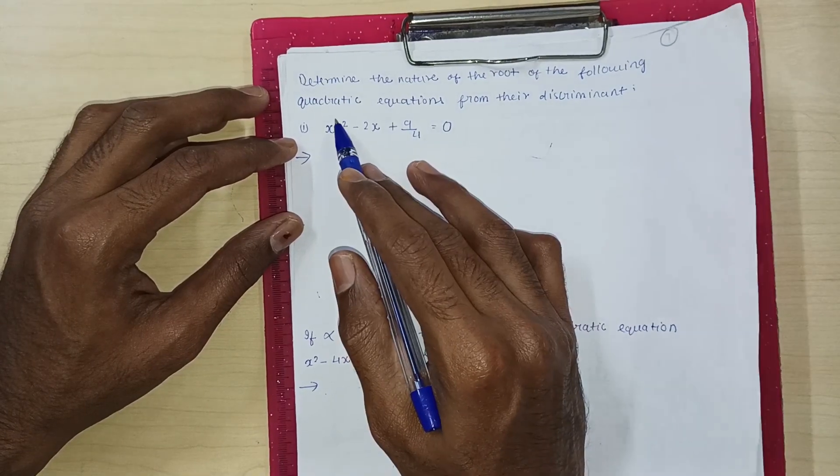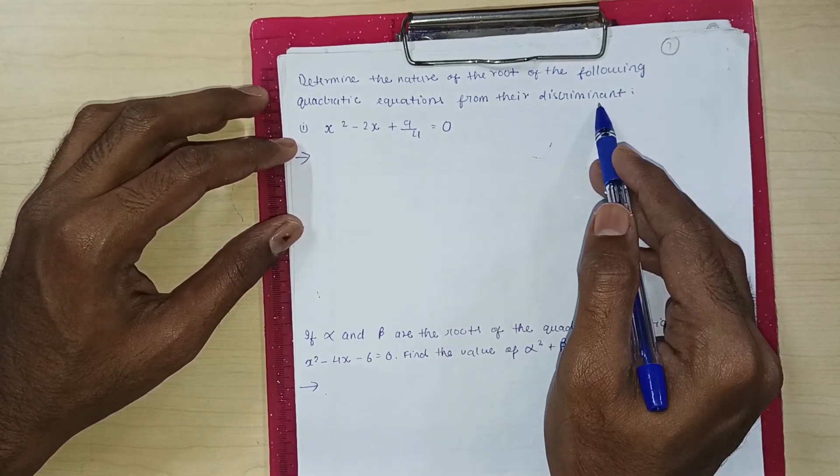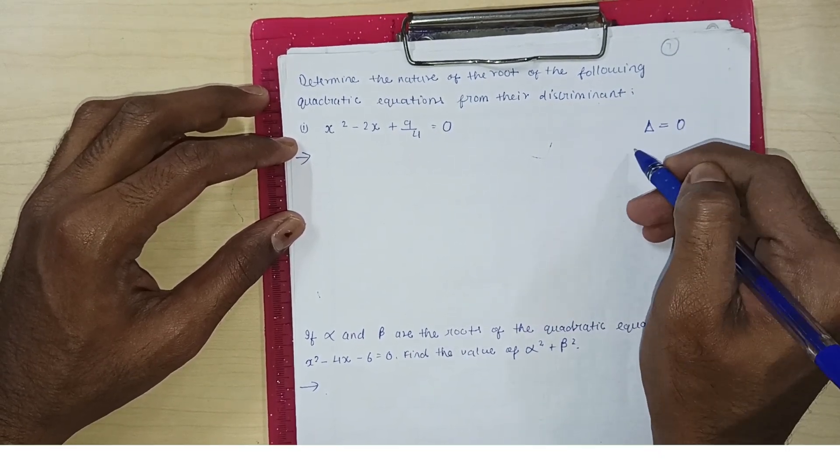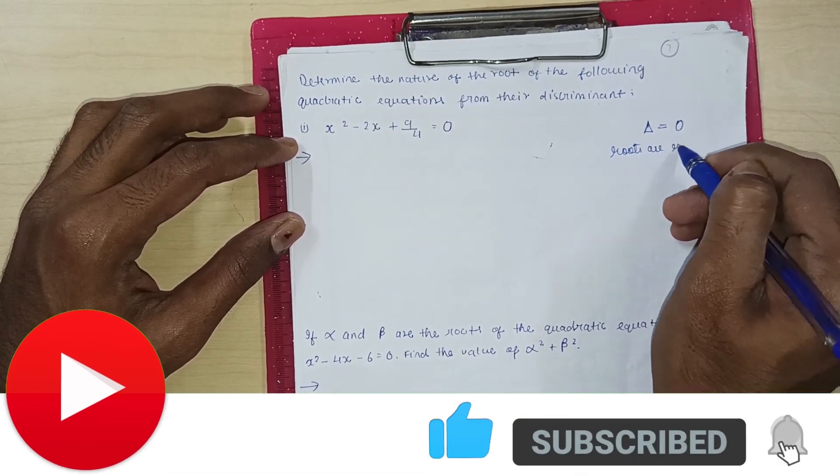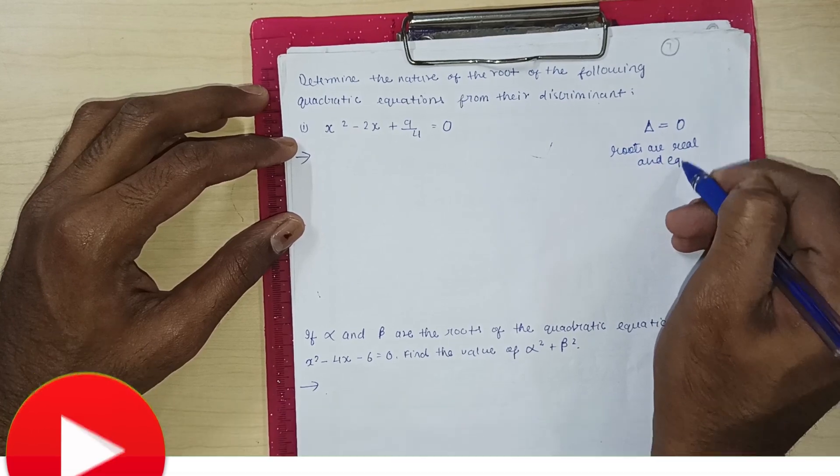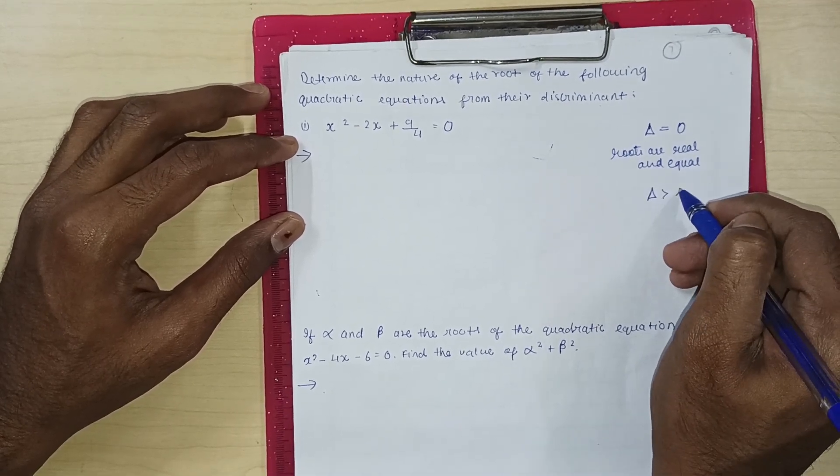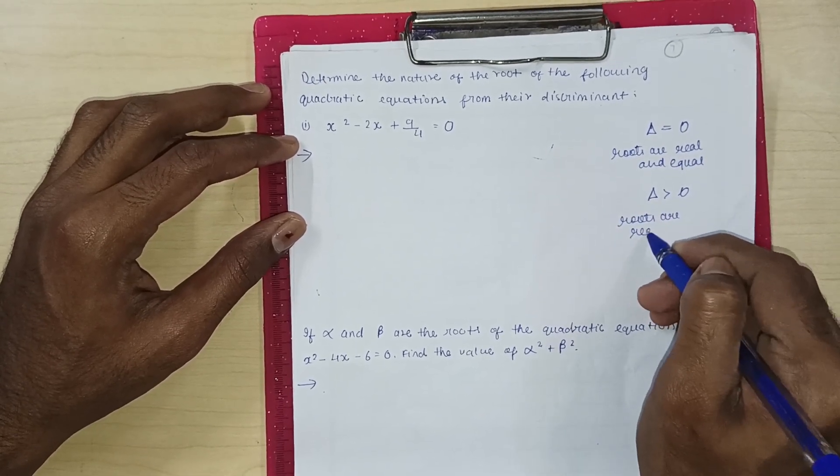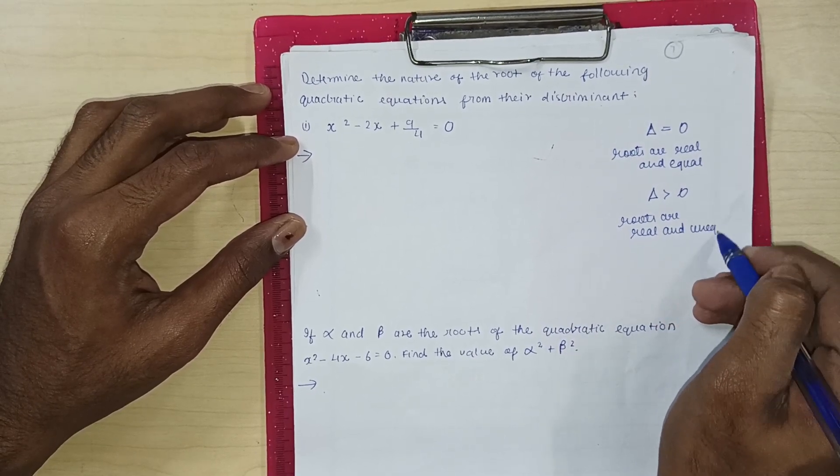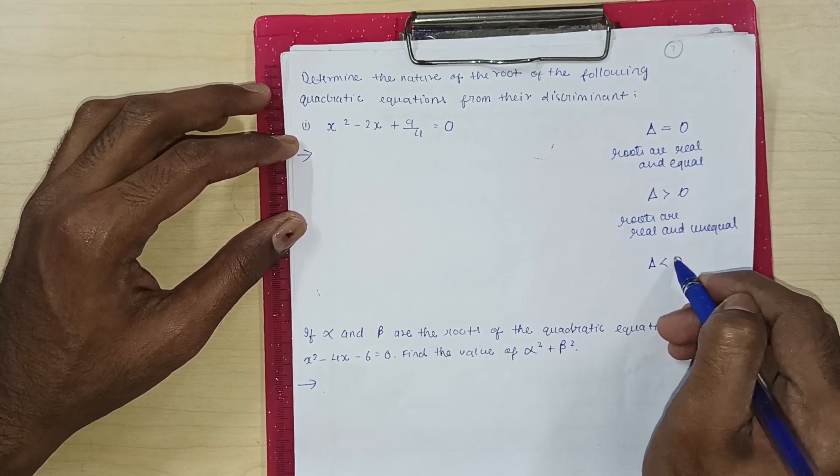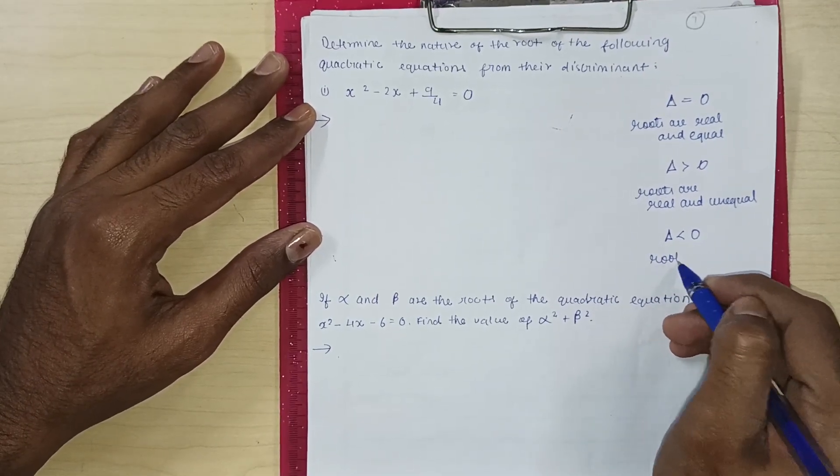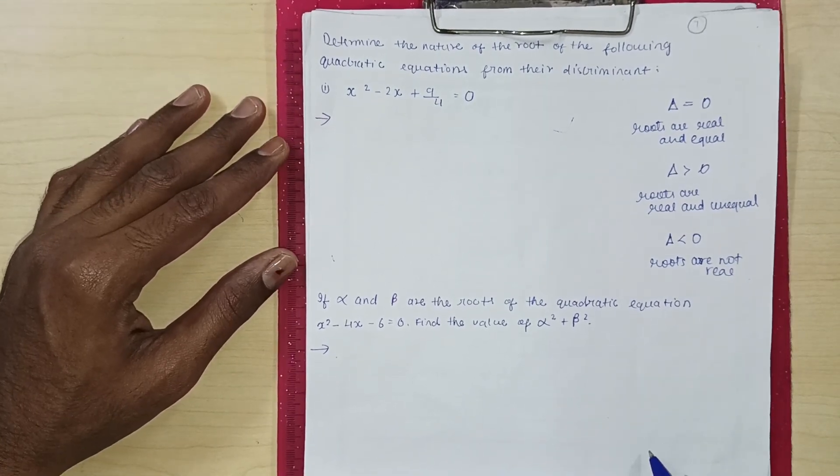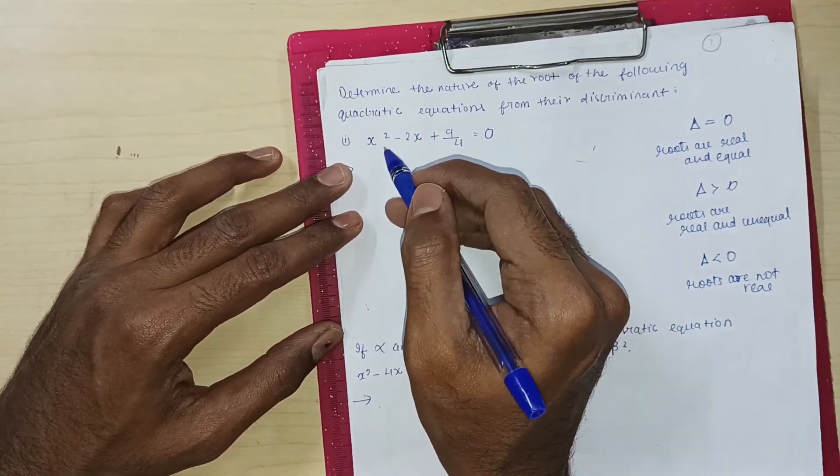Determine the nature of the roots of the following quadratic equation from their discriminants. Yes, the roots are real and equal. Roots are real and delta greater than 0, yes or no? Greater than 0, roots are real and unequal. Real and unequal, alright. Delta less than 0, negative, roots are not real. Roots are not real. Is that clear? Yes or no? Let's just check out the question.